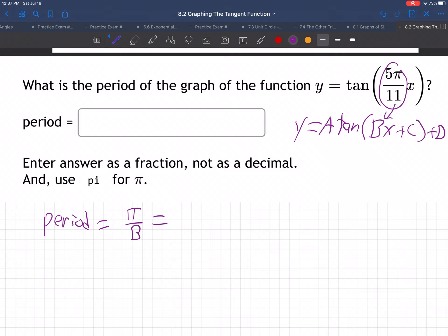B is the number next to x, so π over b, which is 5π over 11. All right, so we plug that in right there, so that's b, and b is 5π over 11.